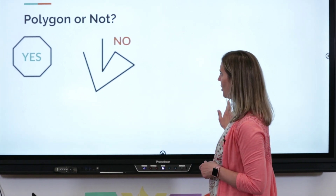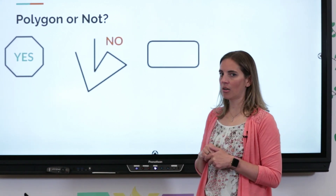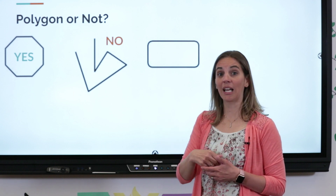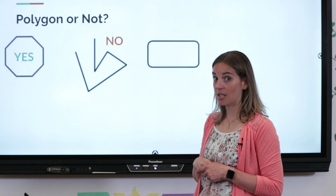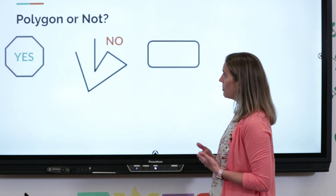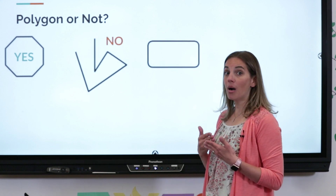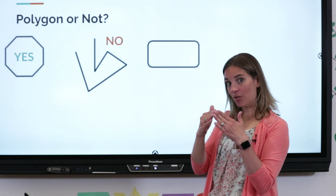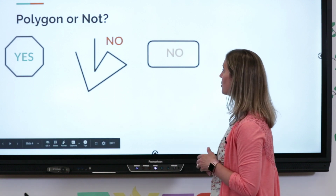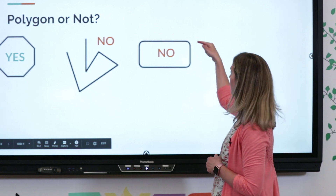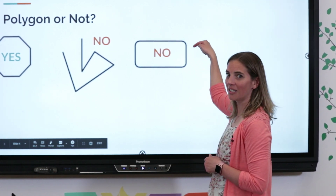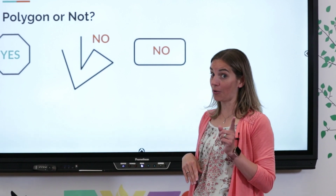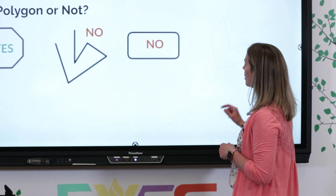One thing you need to know about a polygon is that it doesn't have any curves - it can't have any round edges. So in order for a shape to be a polygon it must have sides and angles but no curves. So this one is not a polygon. Do you see the rounded edges here? That takes it out of the polygon category. Be really careful with that - no curves.